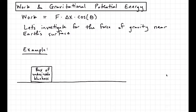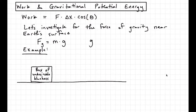As a reminder, we have this quantity called work, and the work done by a force is the magnitude of the force times the magnitude of the displacement times the cosine of the angle between the force and the displacement. We're going to investigate the work done by gravity near Earth's surface, so the force we'll look at is mass times the gravitational acceleration constant. We'll take g to be equal to 10 meters per second squared. Also importantly, the force of gravity points towards Earth.